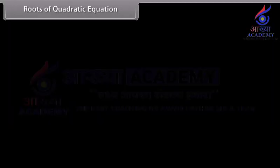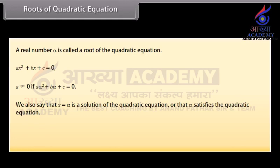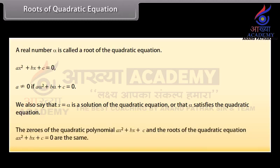Roots of a quadratic equation. A real number alpha is called a root of the quadratic equation ax squared plus bx plus c equals zero, where a is not equal to zero, if a·alpha squared plus b·alpha plus c equals zero. We also say that x equals alpha is a solution of the quadratic equation, or that alpha satisfies the quadratic equation. The zeros of the quadratic polynomial ax squared plus bx plus c and the roots of the quadratic equation ax squared plus bx plus c equals zero are the same.